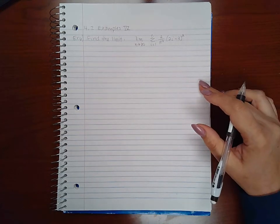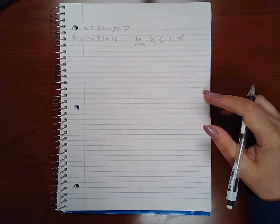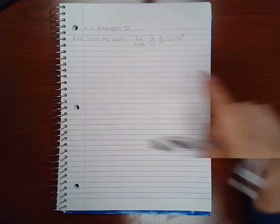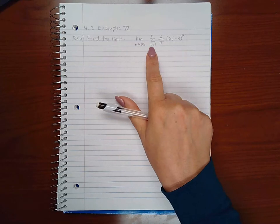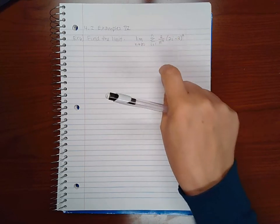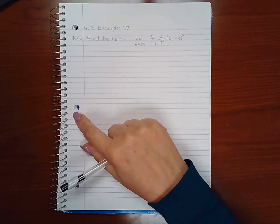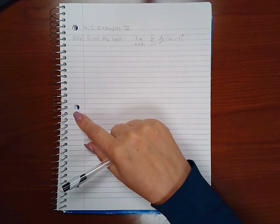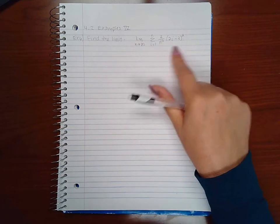Examples part 4, so this is example 6. It says find the limit, so we're taking the limit of the sum. We do need to calculate this sum first so that everything is in terms of n, and then we can take the limit of that function.